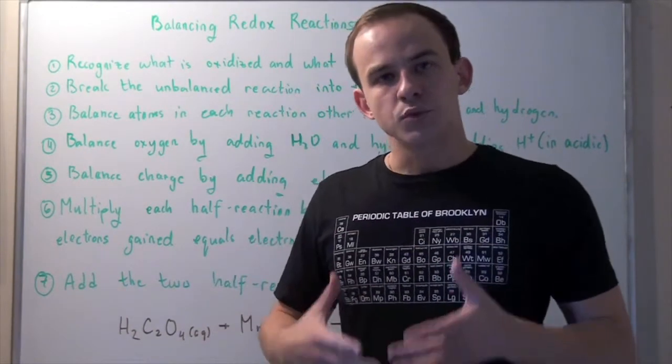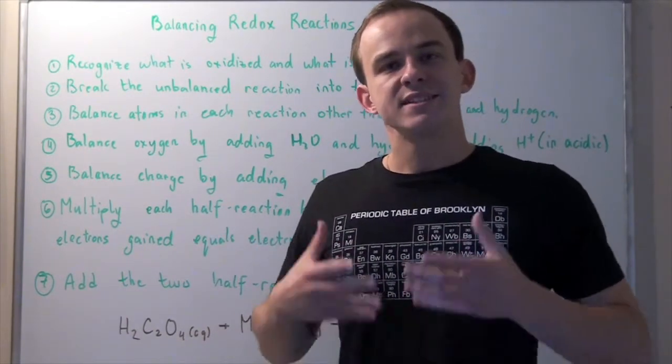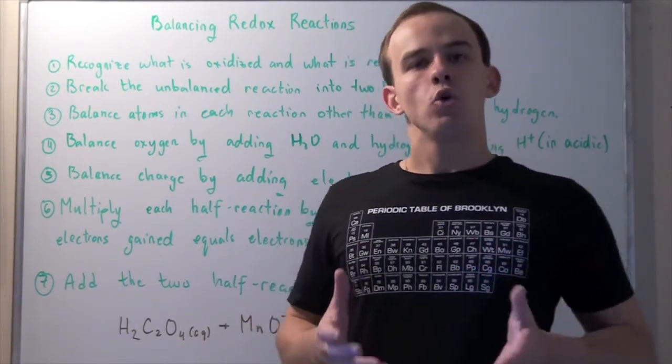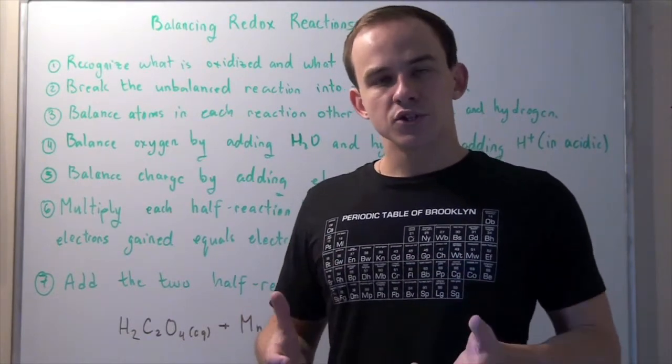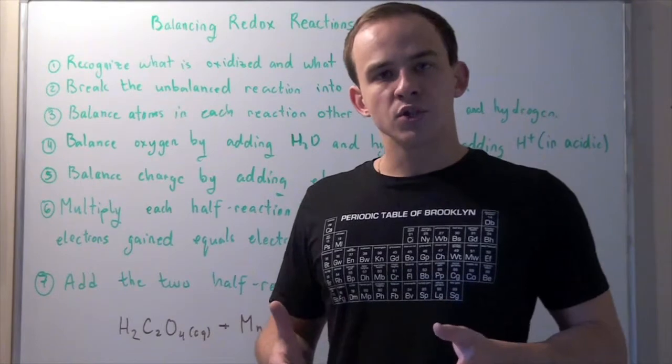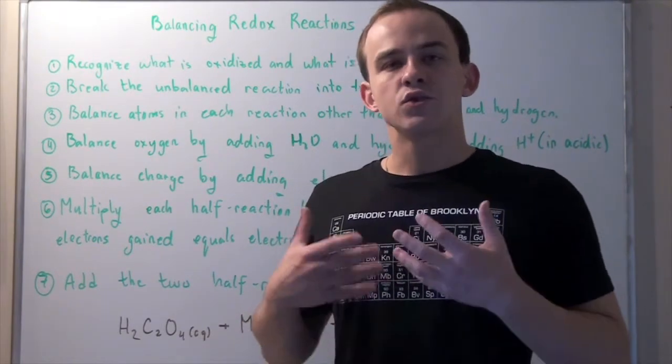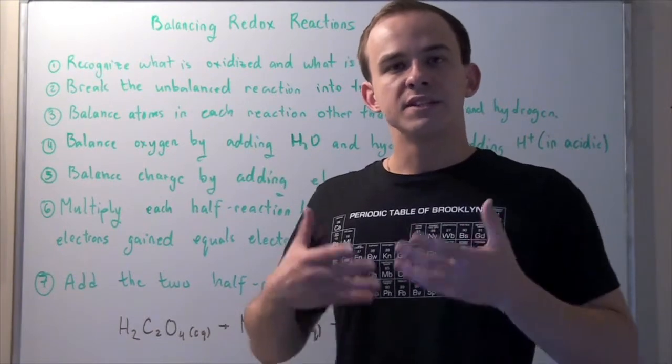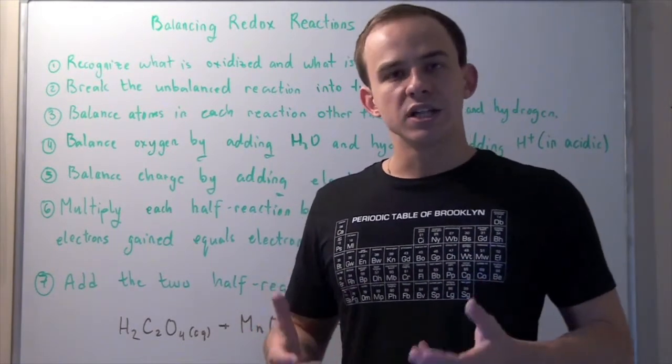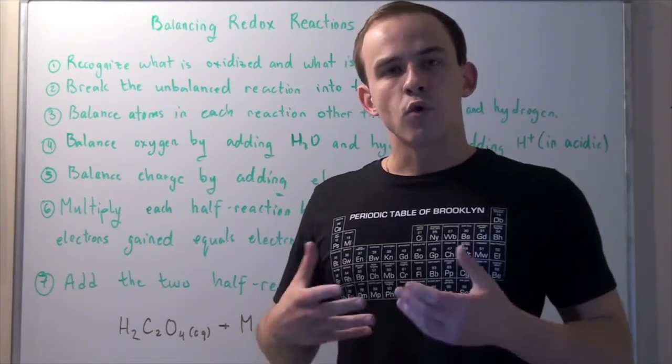Going from an unbalanced redox reaction to a balanced net redox reaction is not always an easy process. Equations for redox reactions often involve water molecules, hydronium molecules, and hydroxide molecules, and therefore determining the number of these molecules in a balanced equation can be very tedious.